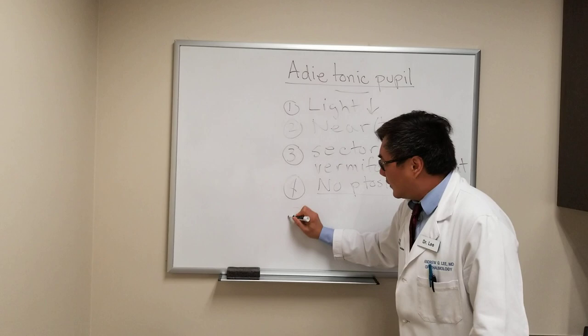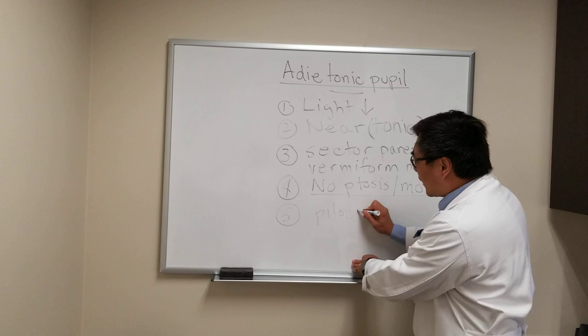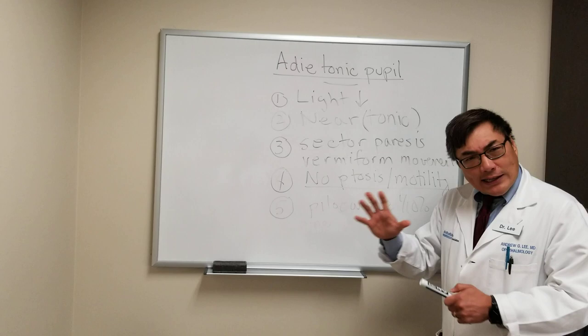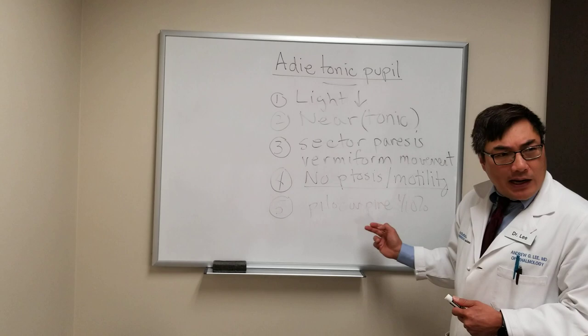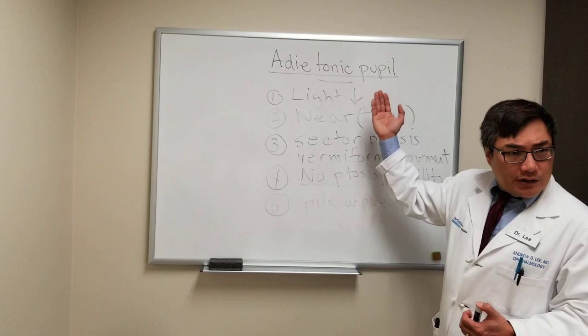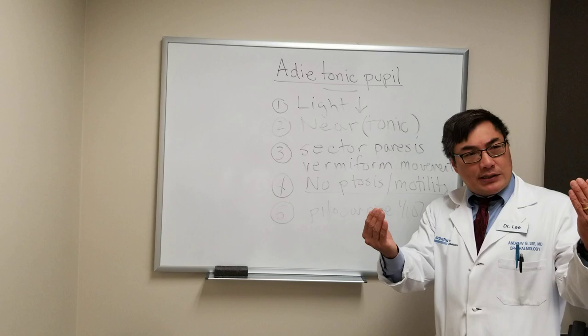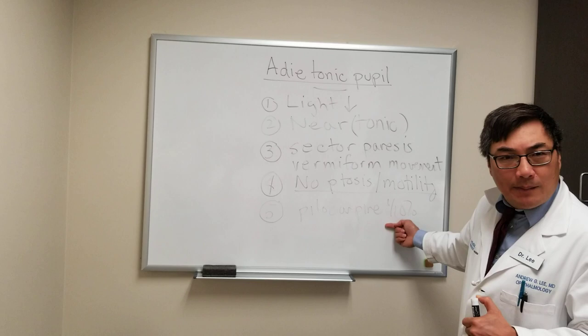If you want to confirm this finding, we can put low-dose pilocarpine into the eye. Pilocarpine is a direct-acting parasympathomimetic. In normal conditions, a dilute amount — one-tenth percent — usually does nothing to a normal pupil. But if you denervate the nerve or its ganglion, as in Adie's tonic pupil, there will be upregulation of the postsynaptic receptors, leading to denervation supersensitivity. Administration of 0.1% pilocarpine in an Adie's tonic pupil will constrict the pupil.